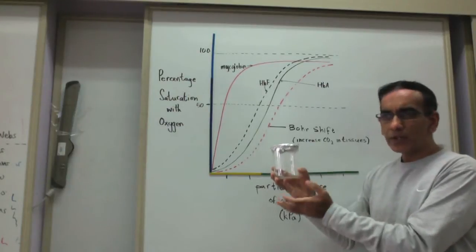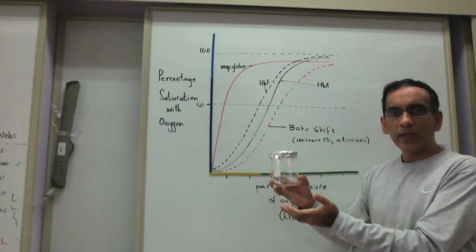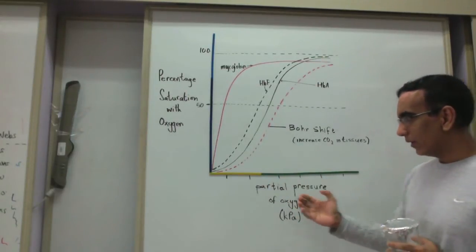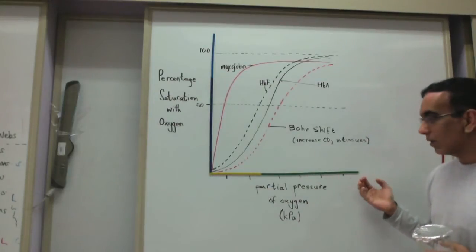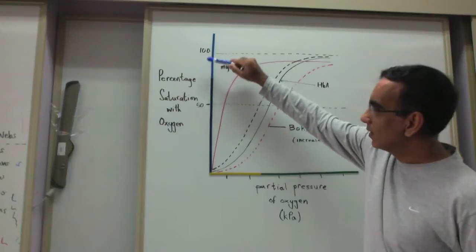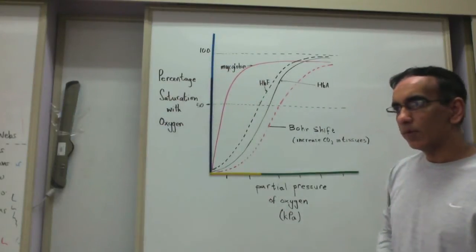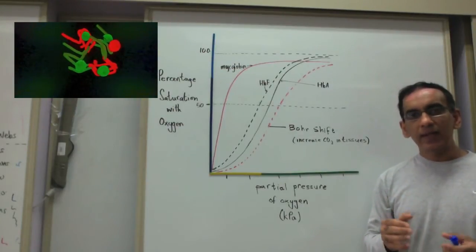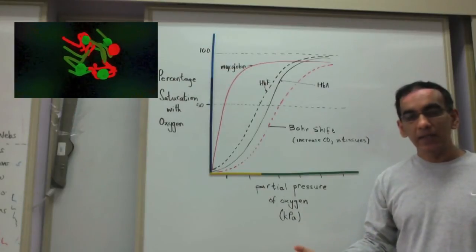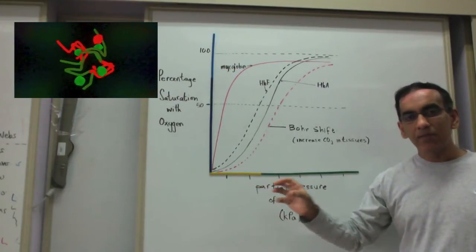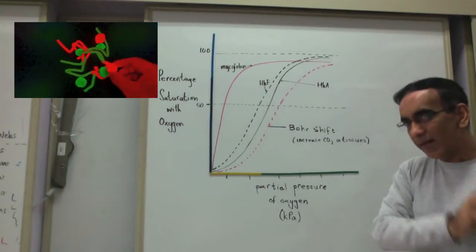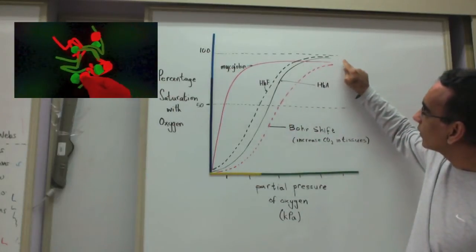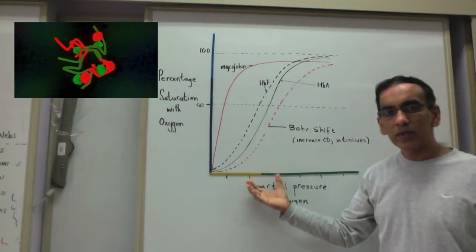When we refer to the partial pressure of oxygen, it's really just another way of referring to the concentration of oxygen. So we might as well just think of this axis as being concentration. Over on the y-axis, we have percentage saturation with oxygen.